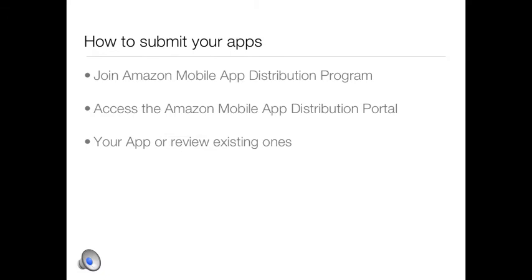So how do you submit your apps? Once you've joined the Amazon mobile app distribution program, you'll be able to access the mobile app distribution portal, which will give you access to your existing applications as well as the ability to submit new ones. You'll also see all the new initiatives and tools that Amazon is providing to its developers to create even better Kindle Fire applications.